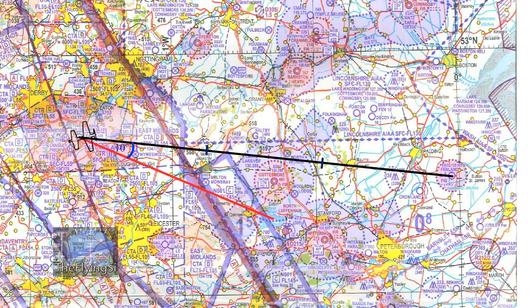Many of you may be familiar with the one-in-60 rule from PPL training or maybe even ATPL ground exams. It's a very good technique which works well, but it's not the one we're going to investigate today. This is a more commercial technique and it's called double drift, and it uses the drift lines.